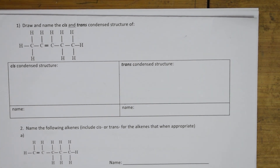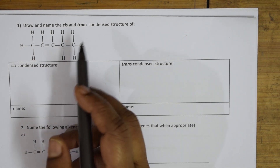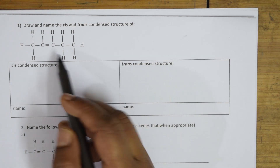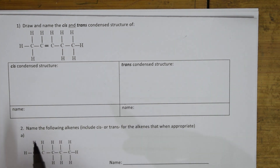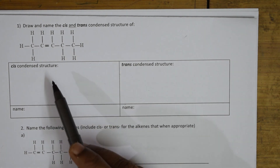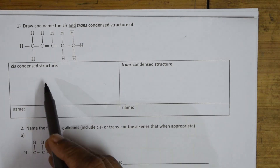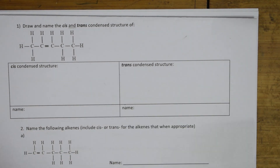Finally you will come to an understanding of how to name a compound. Here they are given: draw and name the cis and trans isomer — draw the cis and trans condensed structure of this. Very interesting question. First of all they have asked me to draw the cis and trans condensed structure, so this is the structure given. I need to draw the condensed form — the cis form and name it, and the trans form and name it.